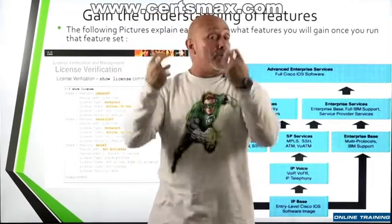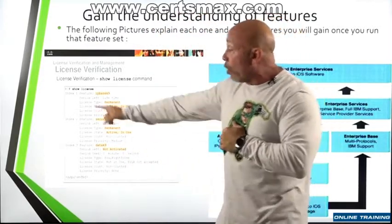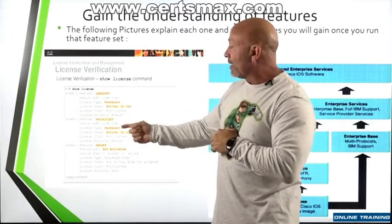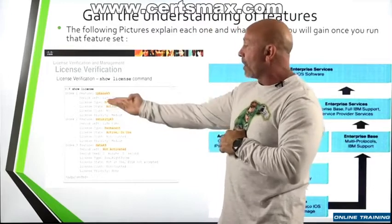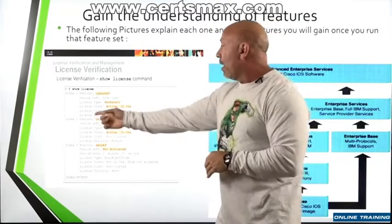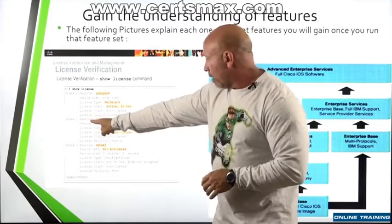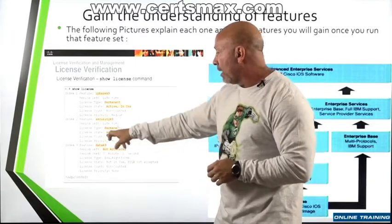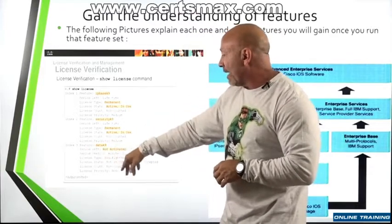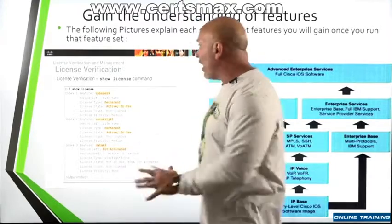If you need new feature sets, you can download them and verify by going into privileged mode and doing a 'show license'. That will tell you what features you have. For example: IP base canine — license type is permanent, license state is active, in use. Security canine — permanent, in use. Data canine — not activated, meaning you would have to activate it to use it.